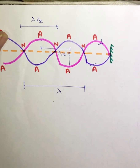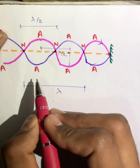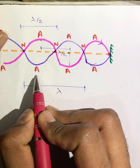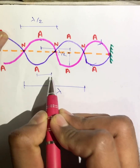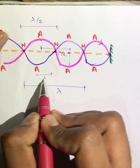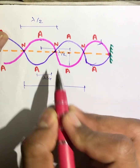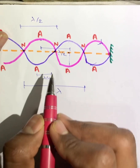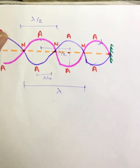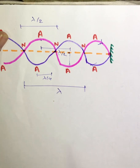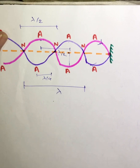The fourth property is that the distance between an anti-node and a node is lambda by four. One loop is lambda by two, and if you divide one loop into two parts, you get lambda by four. So the distance between an anti-node and a node is lambda by four.